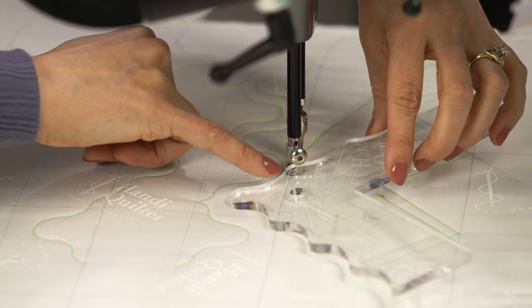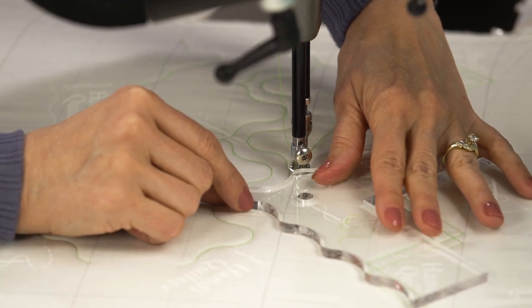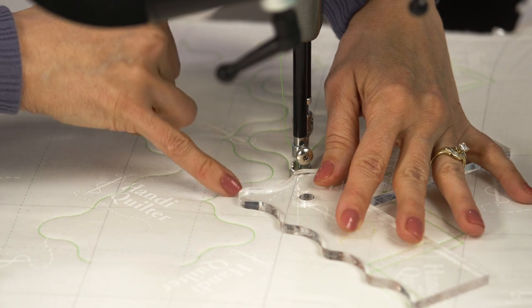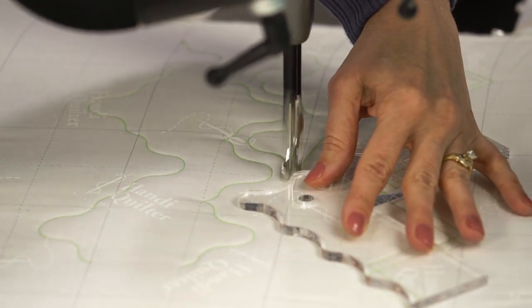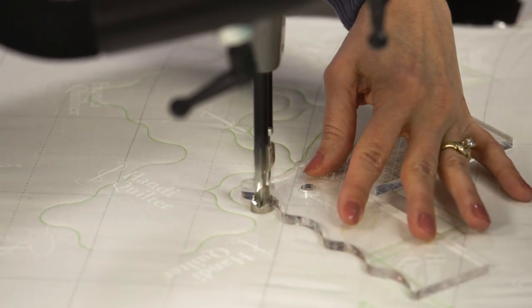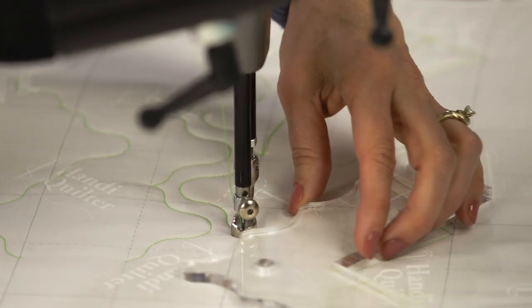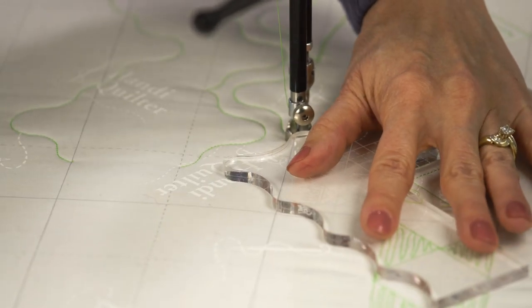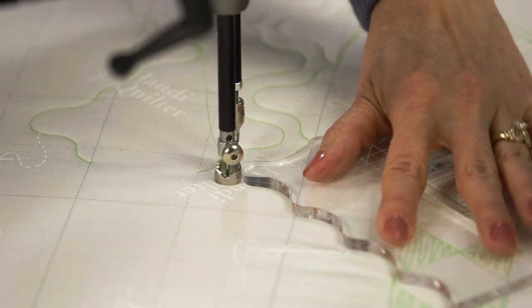So again, I'm going to use the grid line, lining it up on my seam or on the grid on this fabric, making sure that the center line comes down through the center point of the previous design. And then we're stitching around. Remember, doing ruler work is not a race. Take your time, be patient.